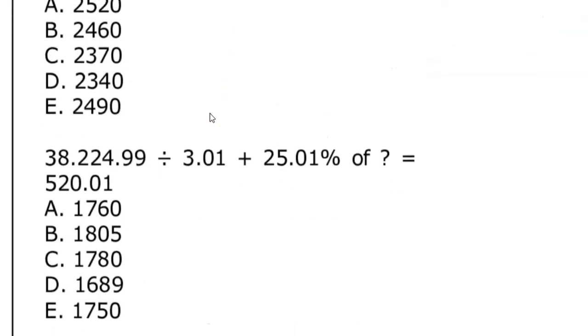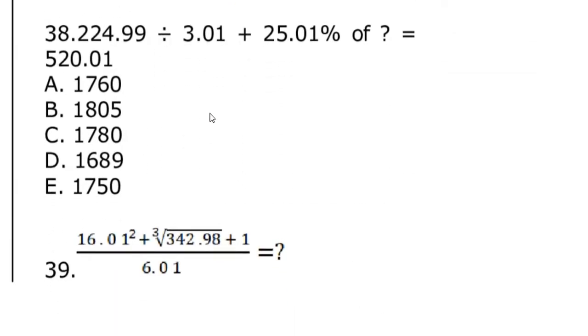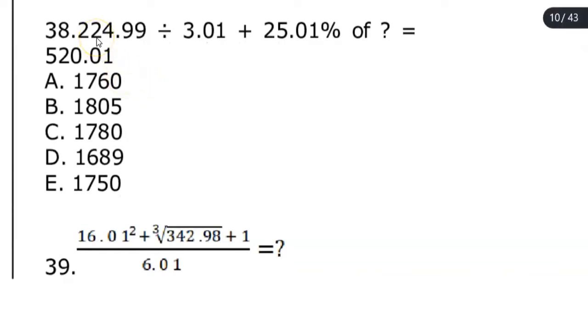Problem 38: 224.99. Since they are not asking for the exact value, we can just round it off. Since this is 9, which is more than 5, this number can be rounded off to 225. The next number, since this is less than 5, can be written as 3.